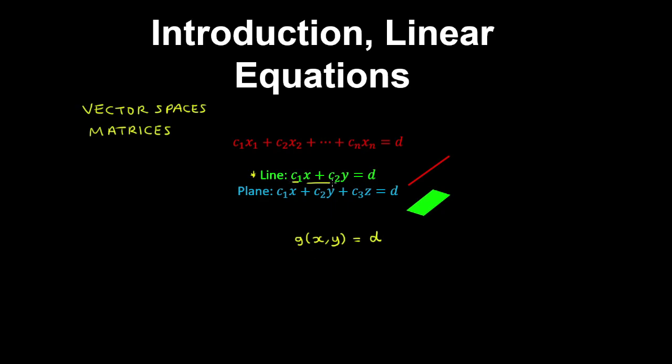And these constants, c1 and c2, are not both zero. So c1 is not zero, or c2 is not zero.